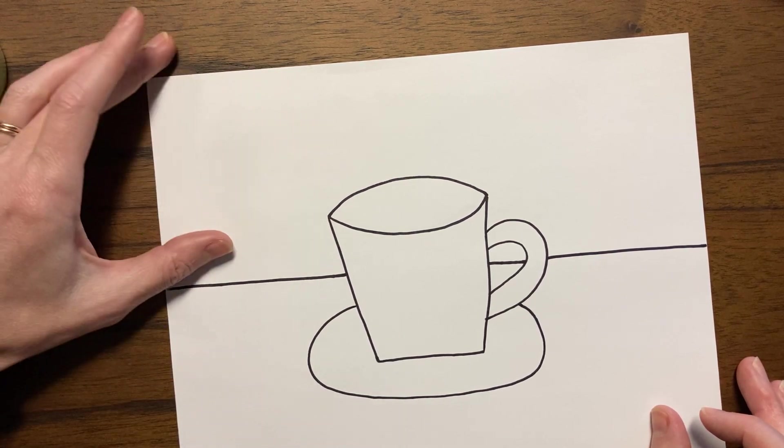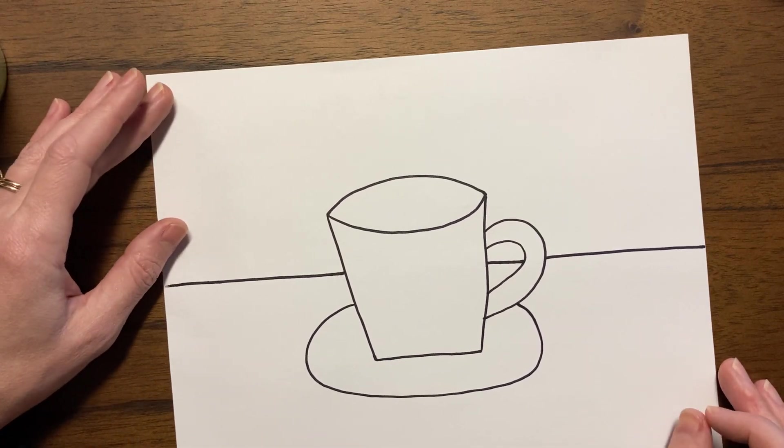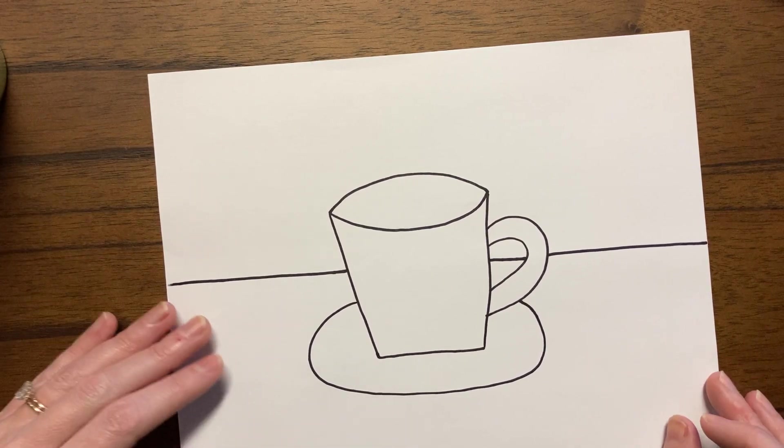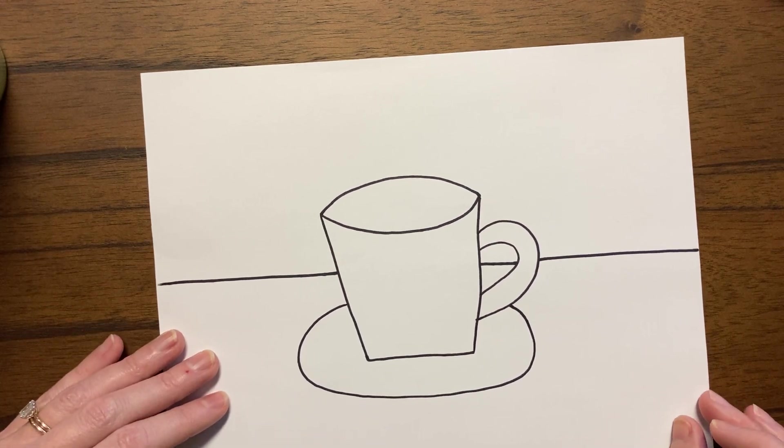So now this is the table where the mug is sitting. This is just the background, right? This space up here. Pretend it's a wall. Maybe there's wallpaper on it. Maybe there's paint on it. Whatever.